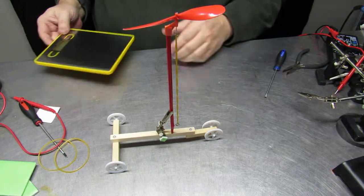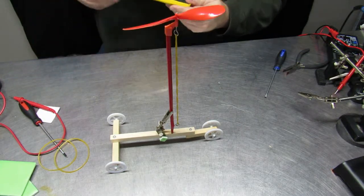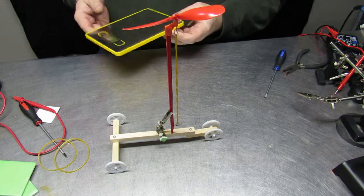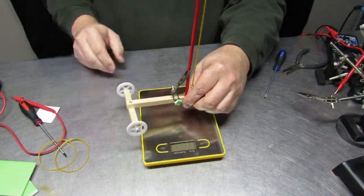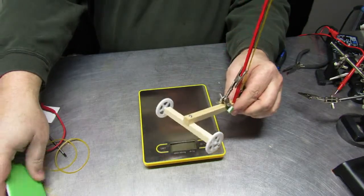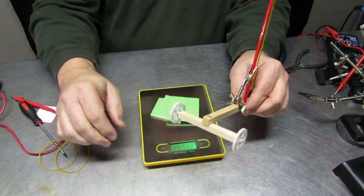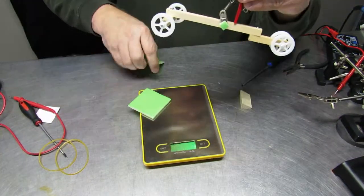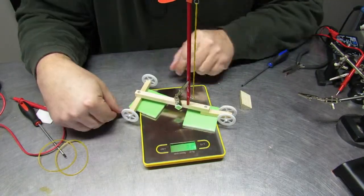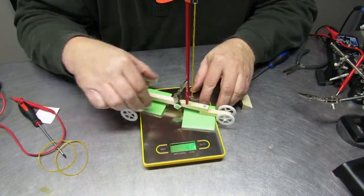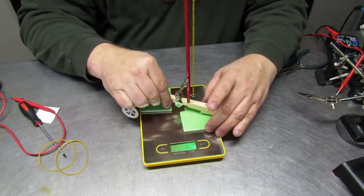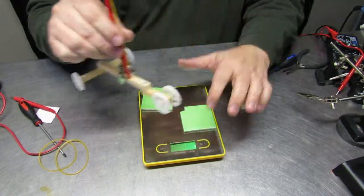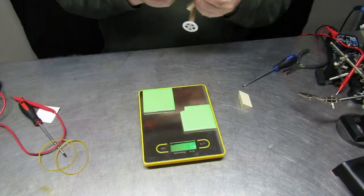It sort of changes orientation as it goes, so it's not entirely stable, but it is the beginnings of an interesting experiment. What we want to do here is see how much weight the helicopter blade will lift. That'll give us an idea of how much thrust it has.